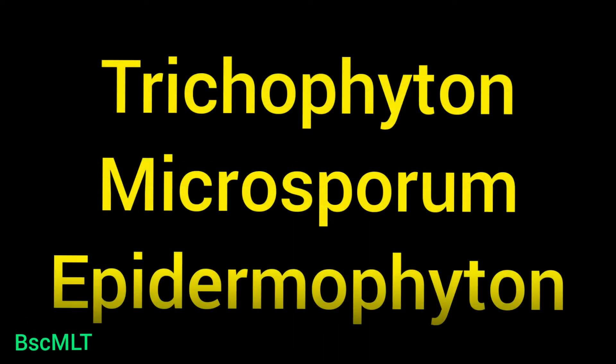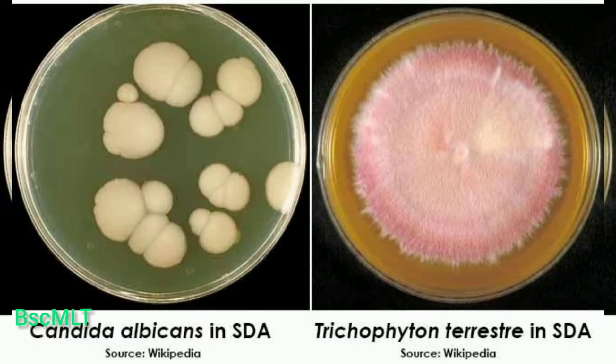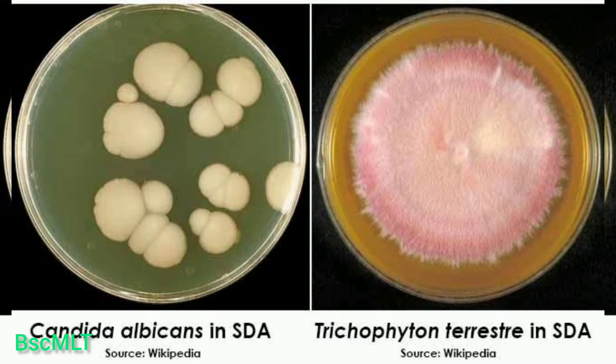The three types of classifications of dermatophytes are Trichophyton, Microsporum, and Epidermophyton. Sabouraud dextrose agar is the best medium for their growth. Differentiation into the three genera is based on the nature of the macroconidia.